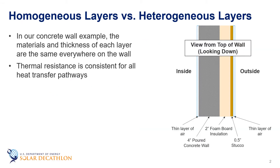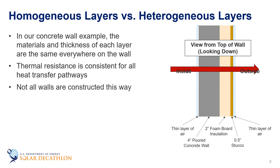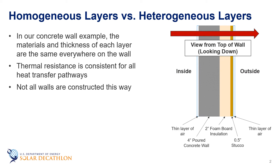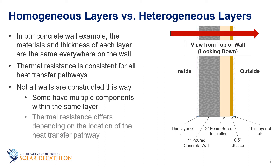In the concrete wall from our previous example, the materials and the thickness of each layer of the wall were the same along all the wall. So the thermal resistance of the wall is consistent for all pathways of heat transfer. However, not all walls are constructed this way. Walls are sometimes made up of multiple components within the same layer. Therefore the thermal resistance of the wall differs depending on which pathway of heat transfer you look at.